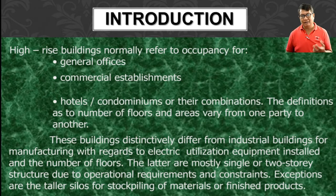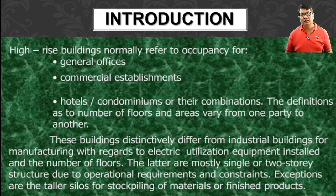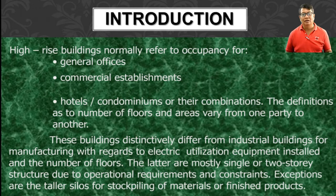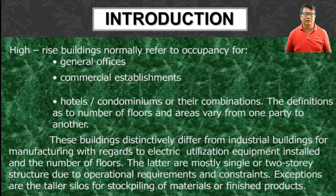We will design a building of not less than 20 stories. This building distinctively differs from industrial buildings for manufacturing with regards to electric utilization, equipment installed, and the number of floors. Industrial and manufacturing buildings are mostly single or two-story. The operational requirements and constraints — flow of work, processes in manufacturing — are the reasons why they are typically at a single floor only. Exceptions are taller silos for stockpiling of materials or finished products.